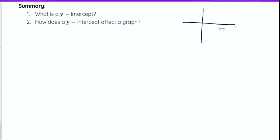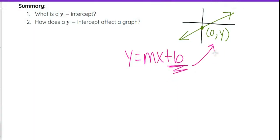So remember that a y-intercept is the point where a graph crosses the y-axis. It's always 0, y or 0, b. The b value in y equals mx plus b always represents that y-intercept, which is the point where it crosses the y-axis.